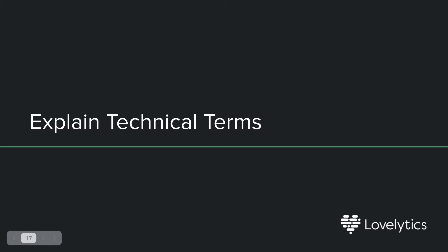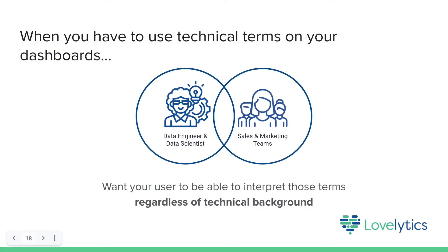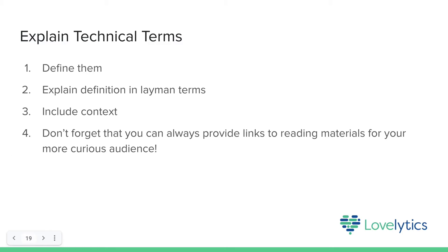But what happens when our dashboard is related to a technical process, as predictive modeling often is? This is where explaining those technical terms becomes very important. If we do need to include technical jargon or metrics in our visualization, make sure to explain them in a way that a non-technical audience would also understand. Our goal is to have users of the dashboard understand what's going on regardless of their technical background. The first step is to define the term, explain the definition in simple and accessible terms with as little jargon as possible, provide context, and if needed, provide additional reading materials through embedded links.